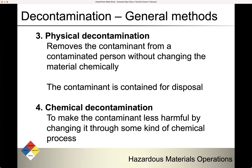Physical decontamination removes the contaminant from a contaminated person without changing the material chemically, and the contaminant is contained for disposal — like washing or brushing something off. It's still the same chemical; it's just not where we don't want it to be. Then there's chemical decontamination, where we use it to make the contaminant less harmful by changing it through some kind of chemical process.